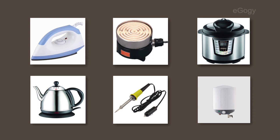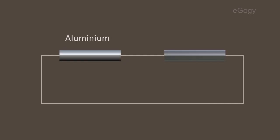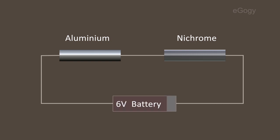Let's do an activity to study the heating effect of electricity. Take an aluminum wire and a Nichrome wire of nearly the same length and thickness, and connect both of them to a six-volt battery in series. What will be the results after the passage of electricity through each?